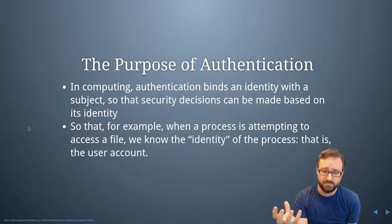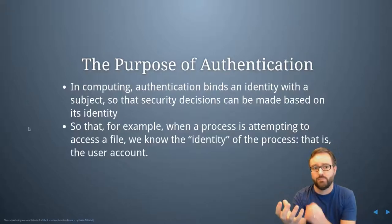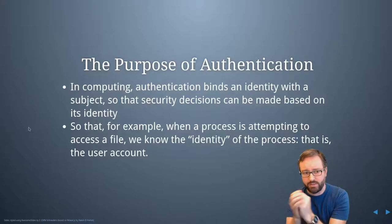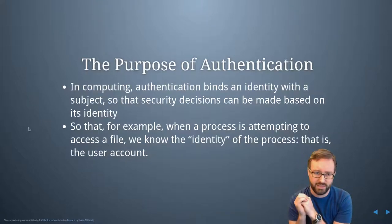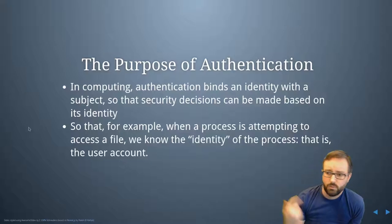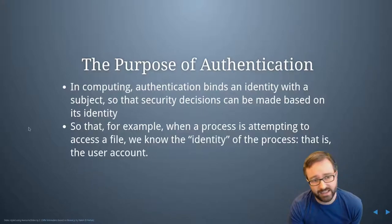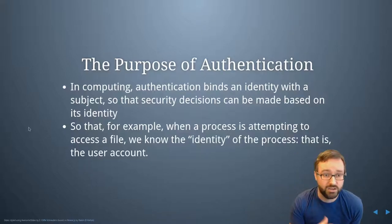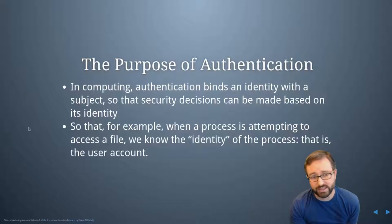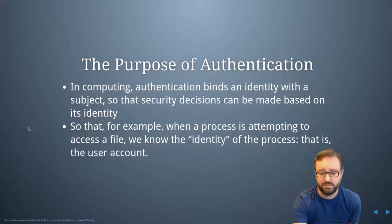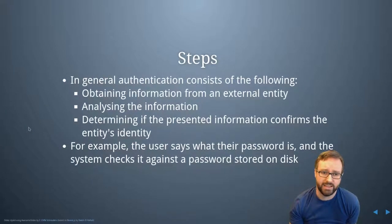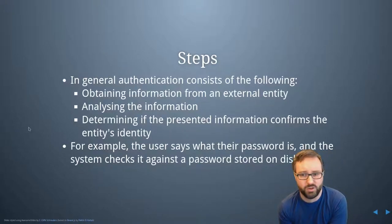We've got this subject within our system actively trying to do something. We need to make sure that we've bound an identity with that subject so that throughout the life of that subject, we can use that information to make security decisions. When a process tries to access a file on a computer system, we can look at what the identity is associated with that process — on Linux it's UID, on Windows it's SID — and use that to make security decisions, because the users have already authenticated to that system. Broadly, you get some information, analyse it, and determine whether it matches what you're expecting — for example, you ask for a password and check that it's correct.